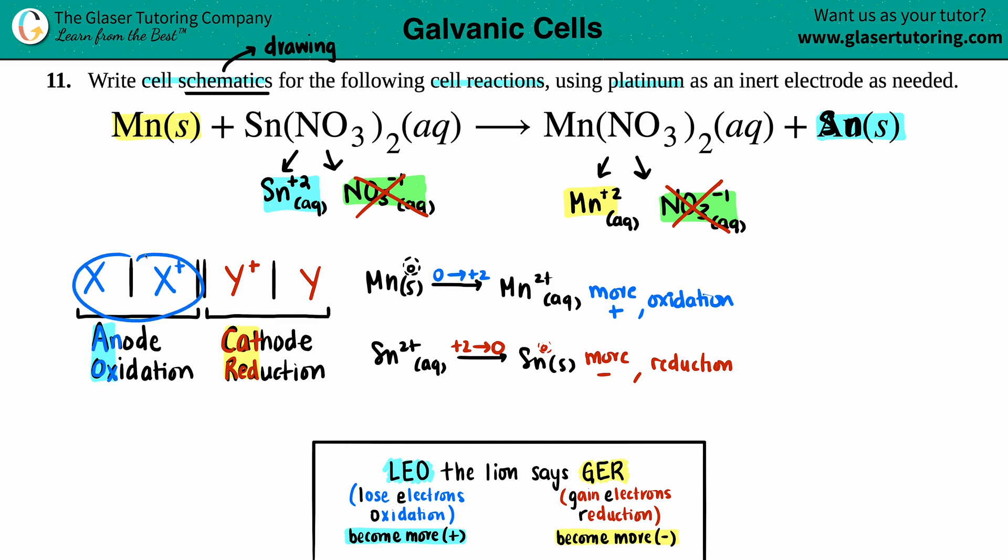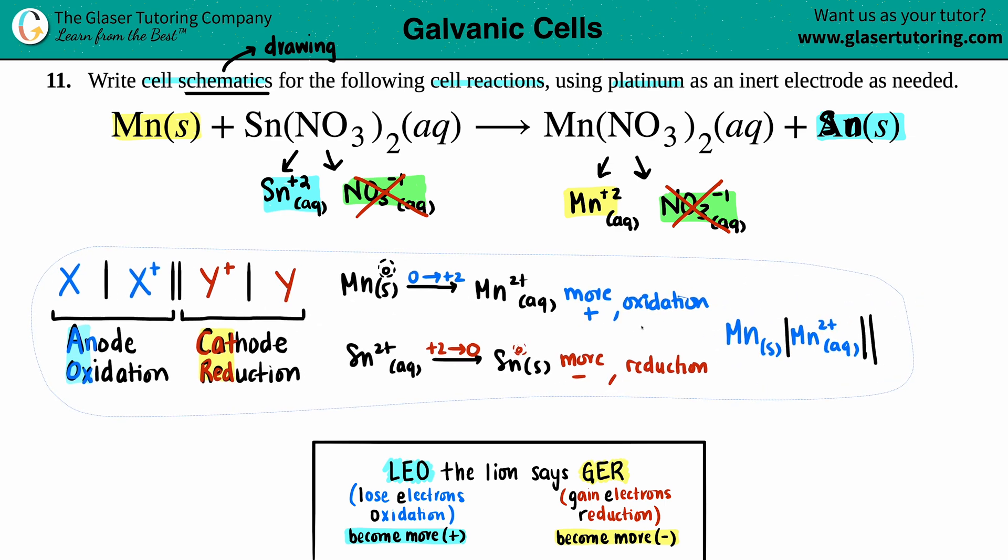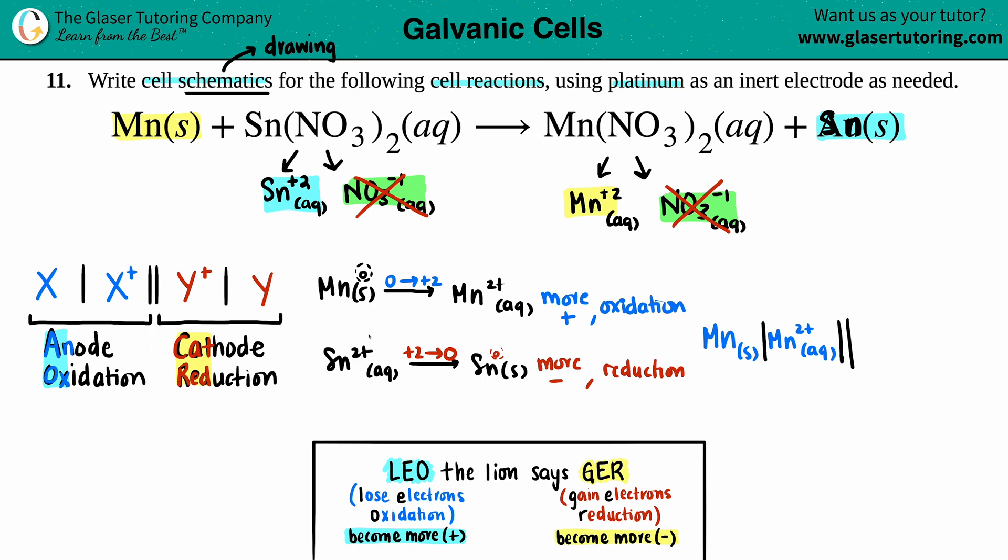Now we just have to draw the right schematic. So oxidation comes first. This is the reactant and this is the product. Here was the reactant and here was the product for the anode or the oxidation. So I have Mn and I'll put solid. Then I put that bracket. Then I put Mn two plus aqueous Mn double bracket. And now let's do the reduction side. So reactant product. Reactant was Sn two plus, and that's aqueous bracket. And then we got Sn solid. And there's your cell schematic.